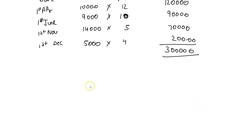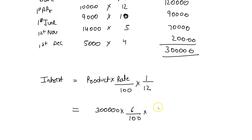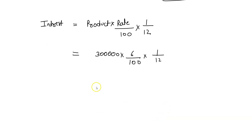Total product = ₹3,00,000. Now calculate interest: Interest = Product × Rate/100 × 1/12 = 3,00,000 × 6/100 × 1/12 = ₹1,500. So interest on Kanika's drawings is ₹1,500.